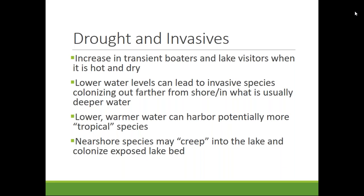Lower water also tends to be warmer, which can favor more tropical invasive species. If they're introduced, they may adapt once water levels and temperatures normalize. Additionally, nearshore terrestrial species may temporarily creep onto exposed lake bed during drought, though they typically disappear once water levels return since they don't tolerate wet conditions.